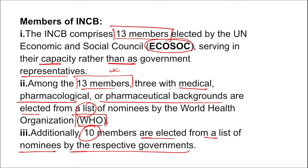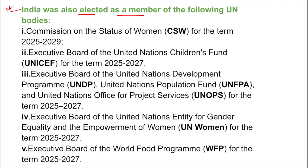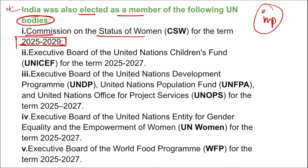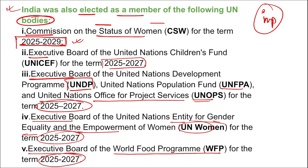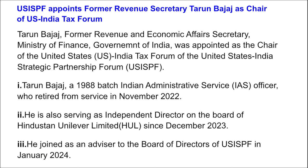India was also elected as a member of various UN bodies: the Commission on the Status of Women for the term 2025–2029; Executive Board of UNICEF for 2025–2027; Executive Board of UNDP, UNFPA, and UNOPS for 2025–2027; Executive Board of UN Women for 2025–2027; and Executive Board of the World Food Programme for 2025–2027.